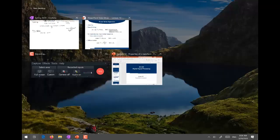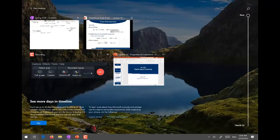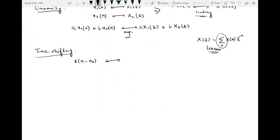In the Z domain, there will be multiplication with a factor Z raised to power minus n₀, multiplied by X(z), which was the actual Z-transform.